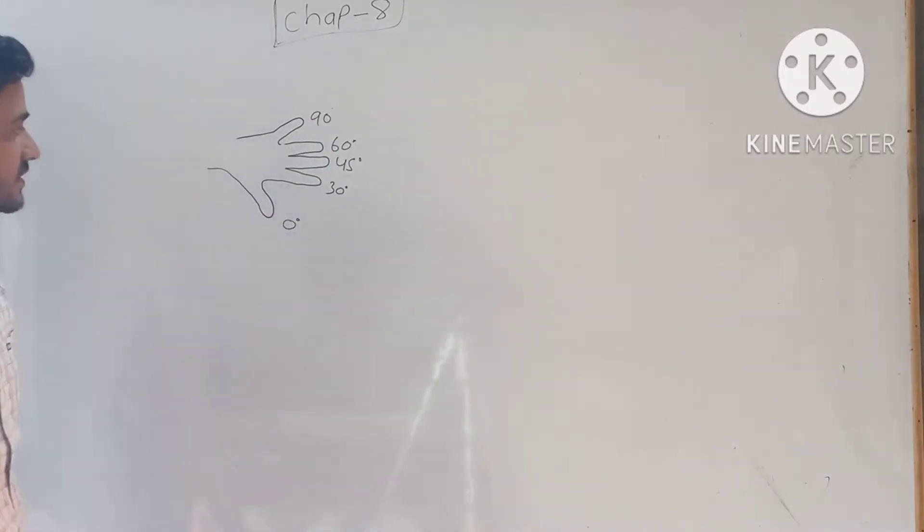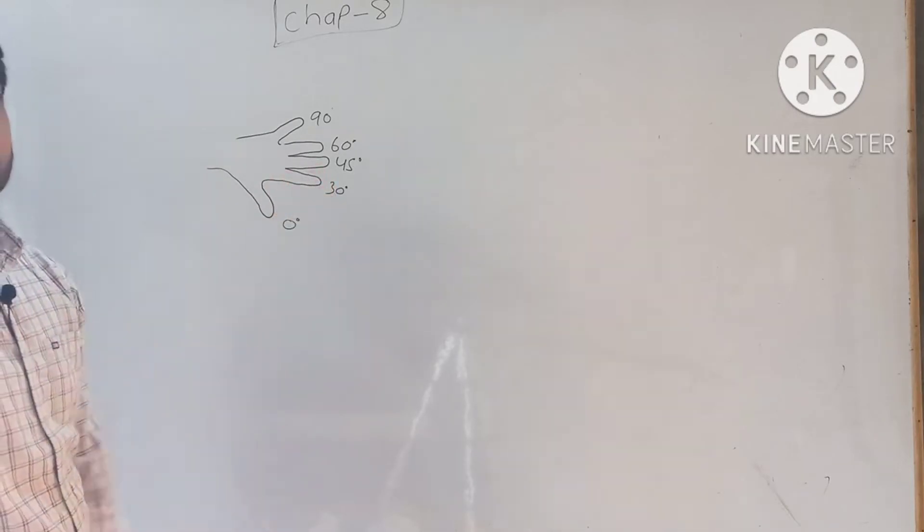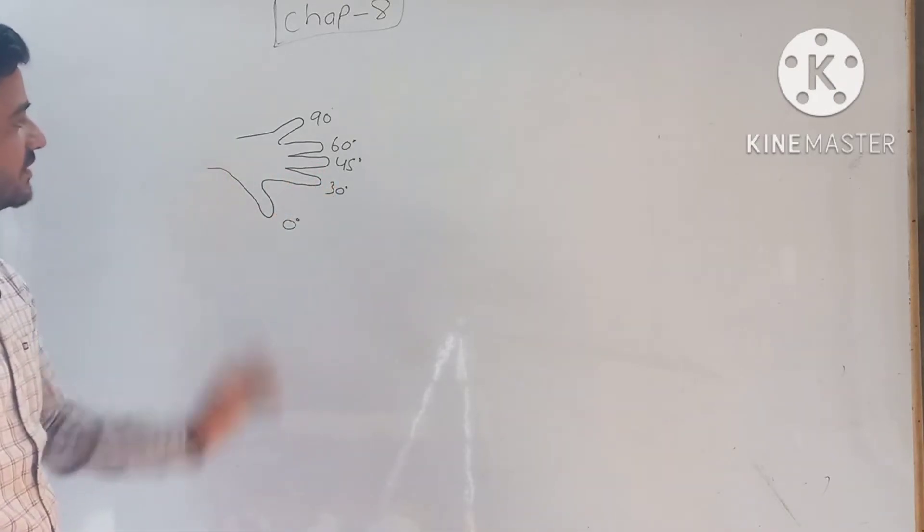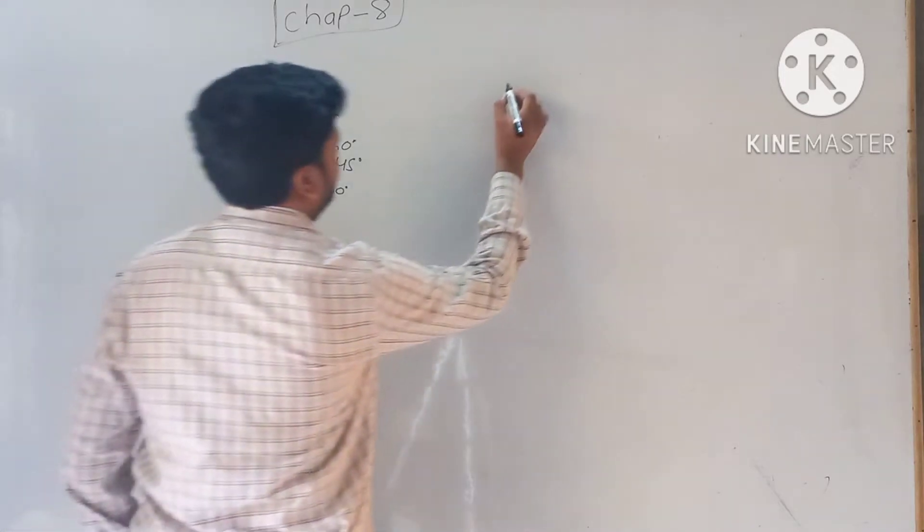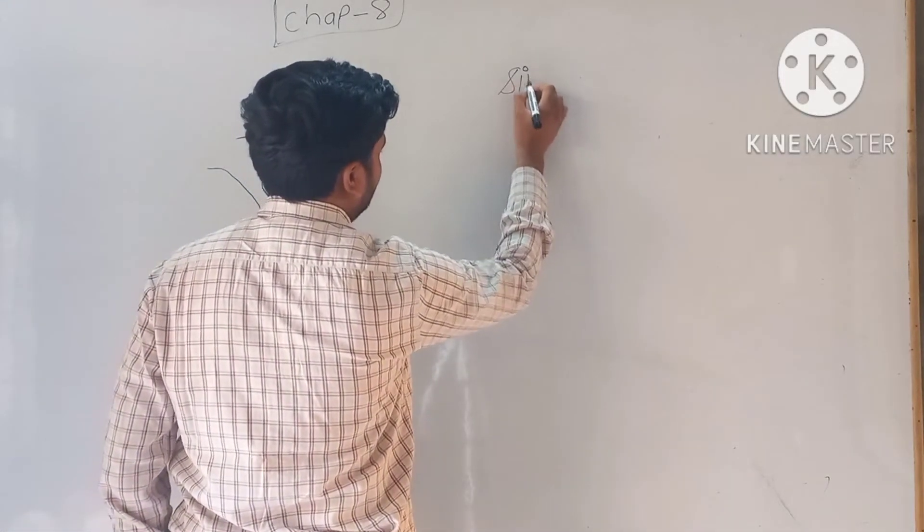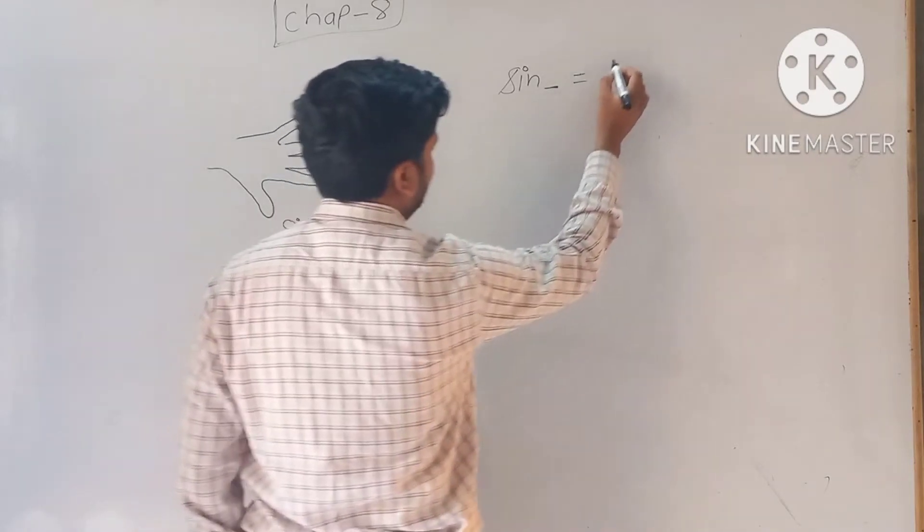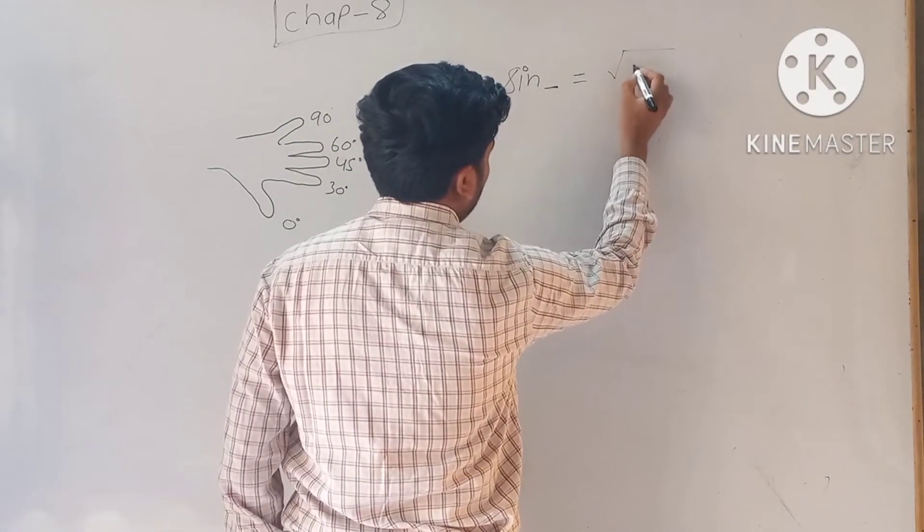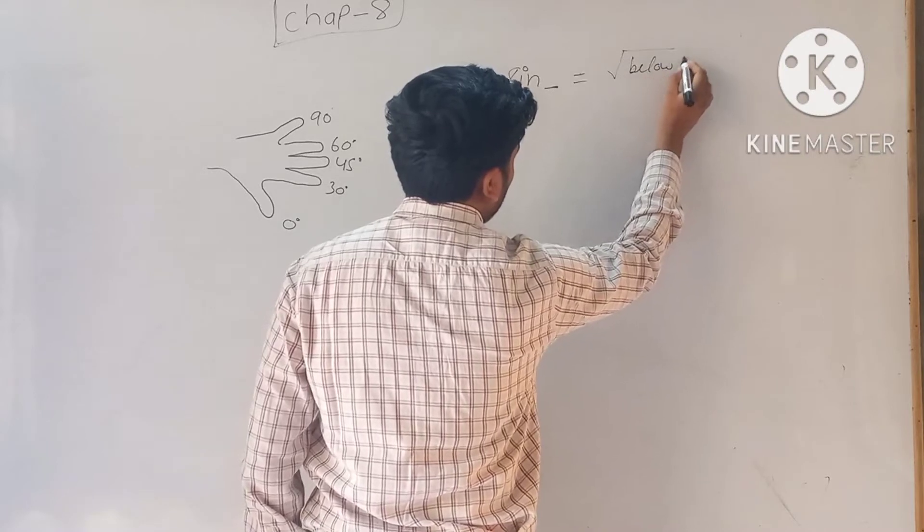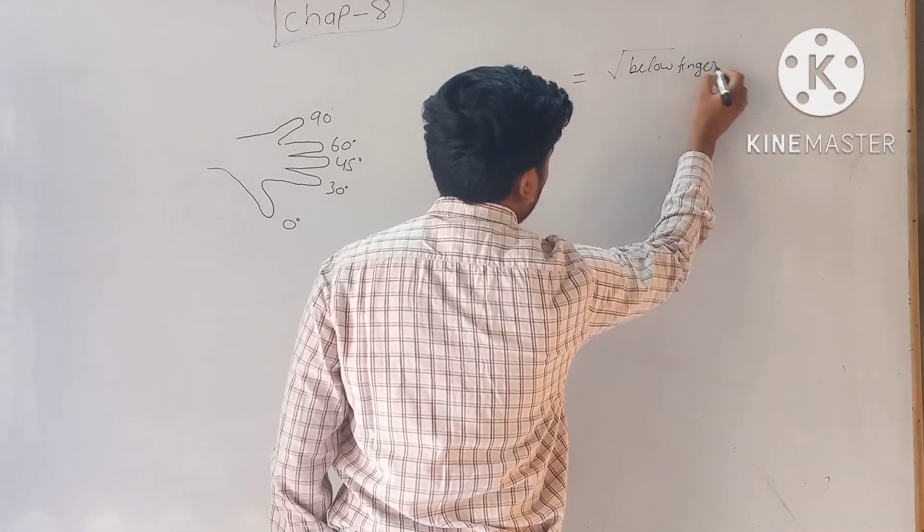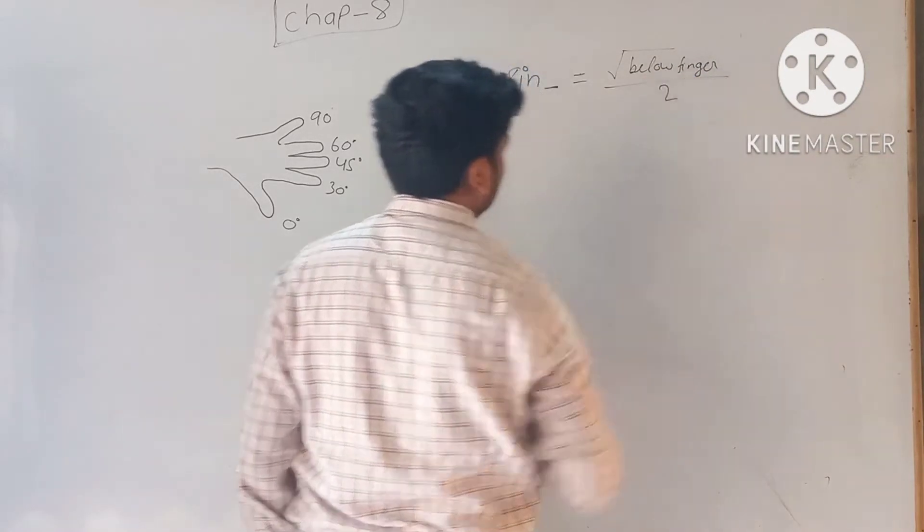I will show you the formula. You can make a table for sine. The formula is: under root of the below finger, upon 2.